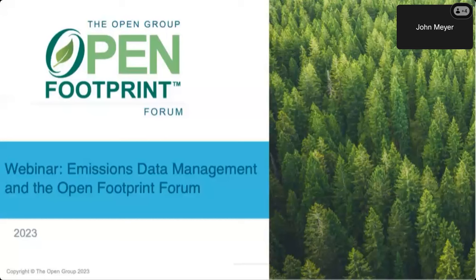If you look at the lower right-hand corner of your screen, you'll see a little speech bubble. If you click on that, it opens up the chat channel, and you can tell us where you've come from, what the weather's like, whether you're having a good day. You can discuss anything in that chat channel and talk to other attendees.